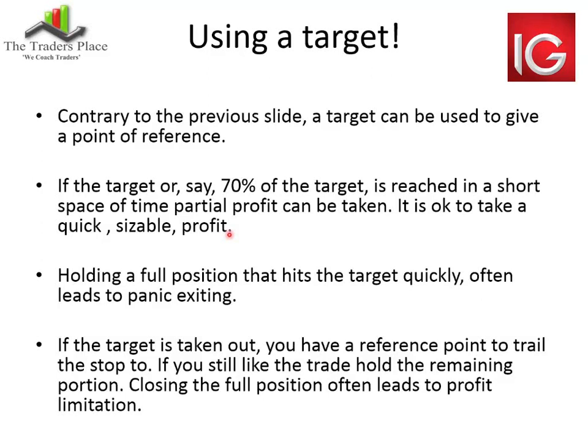How do we use the targets? I gave you two targets — 5% and 10%. There are ways to use these while still implementing the trailing stop. Contrary to what I said before, the target can be used as a point of reference. Let's say the trade goes 7–8%, past target one and now 80% of the way to the second target at 10%. You can simply close out two-thirds of your trade position. It is okay to take a quick, sizable profit — take 70% of the trade off the table, then trail your stop and leave that last portion to run.